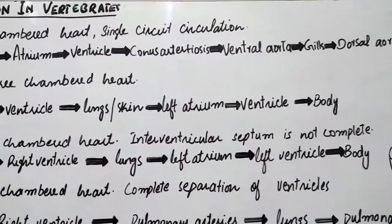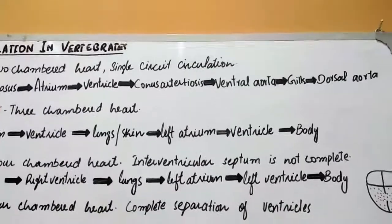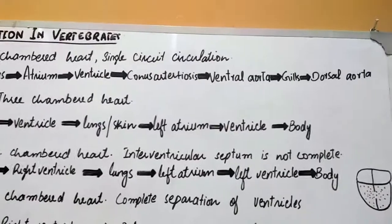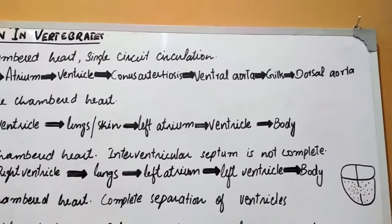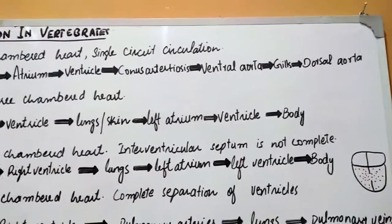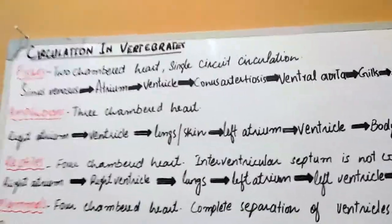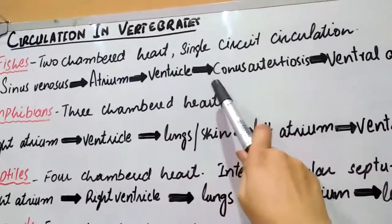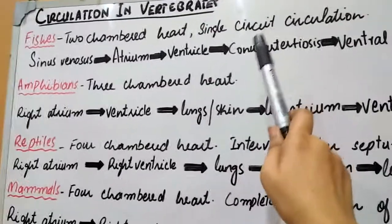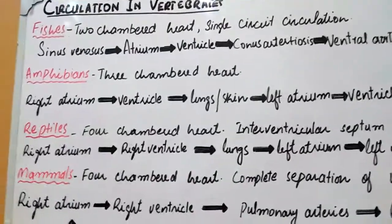From the conus arteriosus, blood goes towards the aorta. The aorta has two parts; from the ventral part, blood is directed towards the gills. From the gills, after oxygenation, blood returns towards the dorsal aorta, and from the dorsal aorta, oxygenated blood is provided to the whole body. Since blood passes only once from the heart, their circulation is called single circuit circulation.